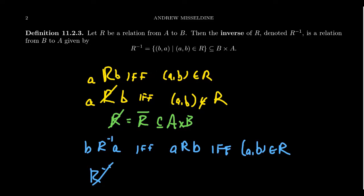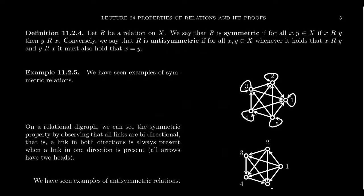When A equals B, all four constructions — R, its negation, its inverse, and the negation of the inverse — are relations on the exact same set. We mentioned that a reflexive relation's negation is necessarily irreflexive. Properties of one relation can influence properties of its relatives. This is why we introduce the inverse: the next property, symmetry, has a direct relationship with the inverse.